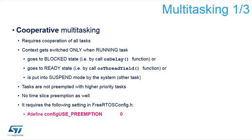This requires that the task gets blocked by calling a function that blocks it — by waiting for a timeout or some other object — or it can get to a ready state by calling os_thread_yield, or it can be put to suspend mode by the system or another task, or it can suspend itself. One advantage is that tasks are not preempted by higher-priority tasks, so you get all the time you need to finish your own job. There is no time slicing implemented, so tasks don't switch periodically based on a time base.